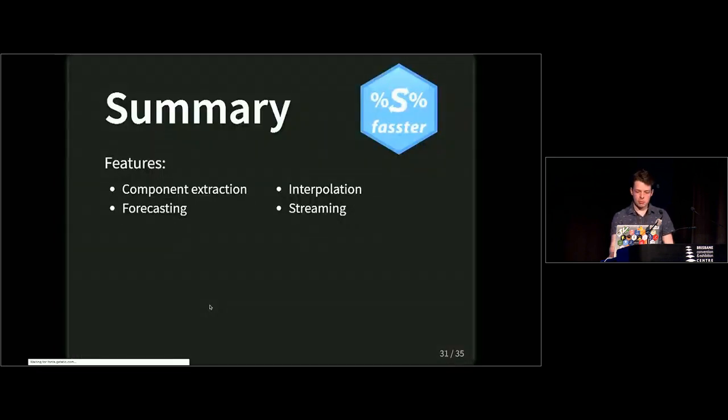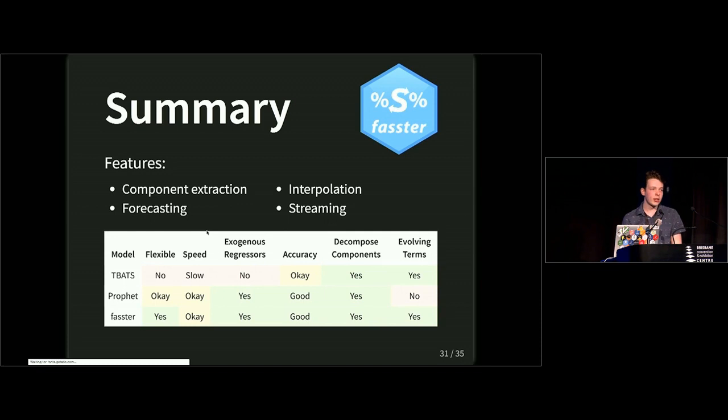So in summary FASTA is a feature-rich state space model for forecasting multiple seasonality. It supports component extraction, interpolation, forecasting and streaming data and comparing it with the latest and greatest from state space and regression based models, TBATS is definitely slow. That takes a long time to estimate and it doesn't support exogenous regressors. So at least on the state space front I think FASTA does quite a good job. It's pretty good with speed and it definitely supports any sort of exogenous regressors you need and the flexible formula based specification ticks that box as well.